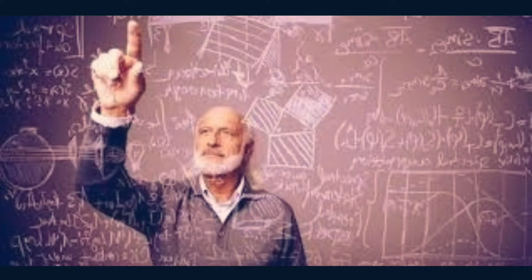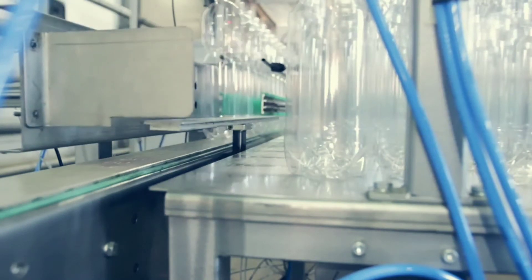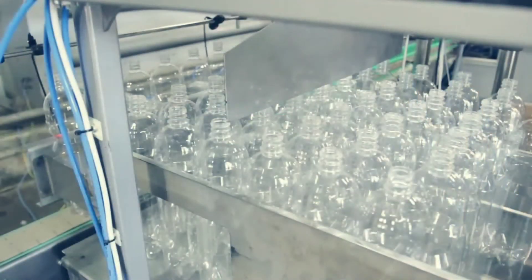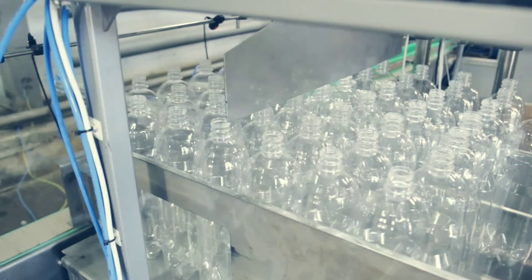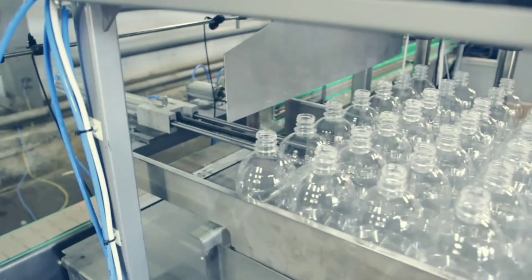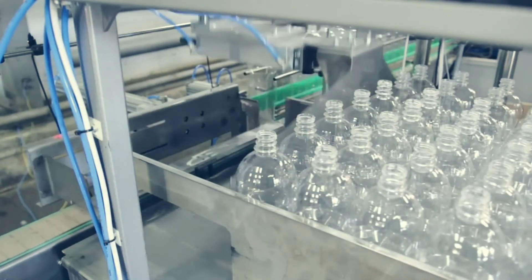Physicists, process engineers, and manufacturers of beverages and household chemicals are constantly working to create the optimal shape of bottles, which would make the process of pouring from them as quick, convenient, and safe as possible. This is important not only for ordinary consumers but also for a number of technological processes.